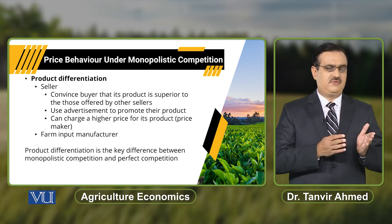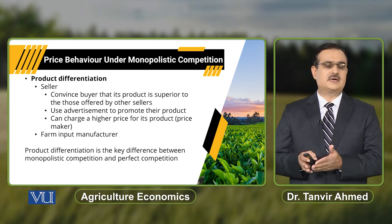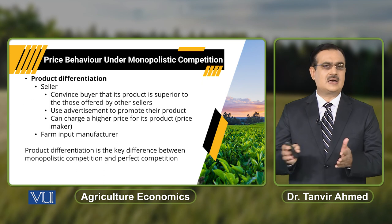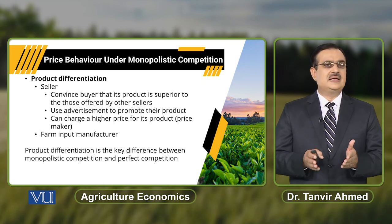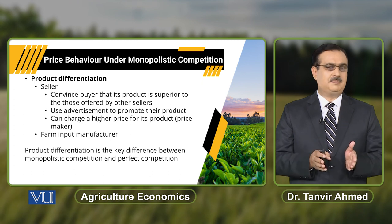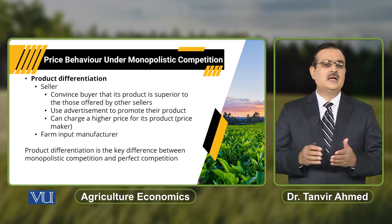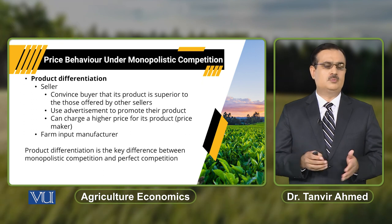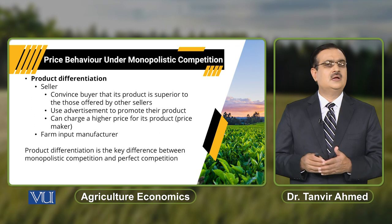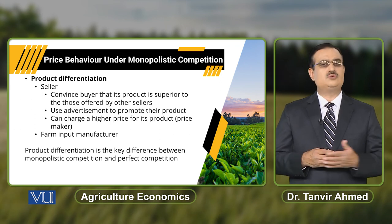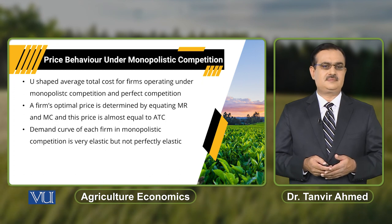If I compare between monopolistic competition and perfect competition, in both there are a large number of sellers. The difference is that the product is differentiated under monopolistic competition, while under a perfectly competitive market the product is homogenous. In a perfectly competitive market there is free entry and exit. In this situation, monopolistic competition will prevail when products are differentiated.